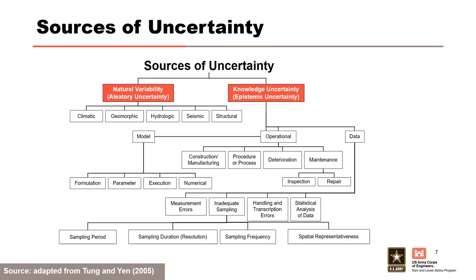Here are some different sources of uncertainty adapted from Tung and Yin, categorized as either natural variability or knowledge uncertainty. Keep in mind that some things in risk analysis can have uncertainty falling under both categories — like a stage frequency curve, which has natural variability in flood inflow but also knowledge uncertainty in parameters like runoff coefficients and loss rates.